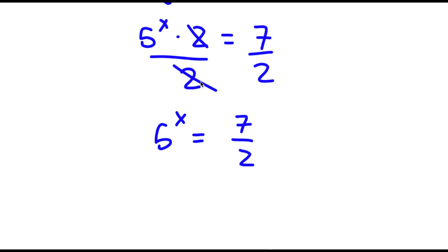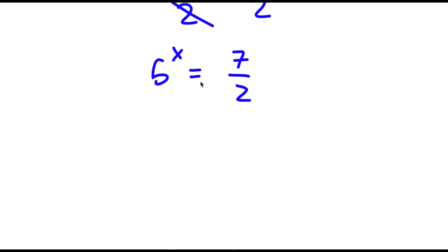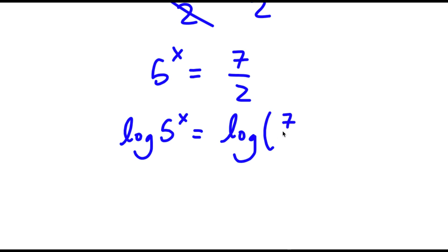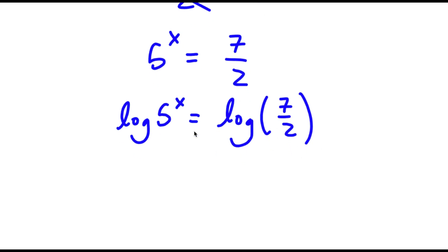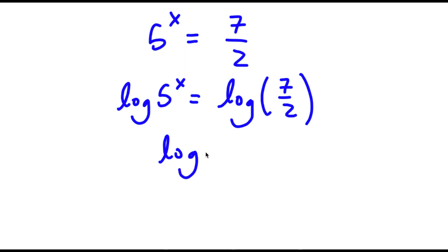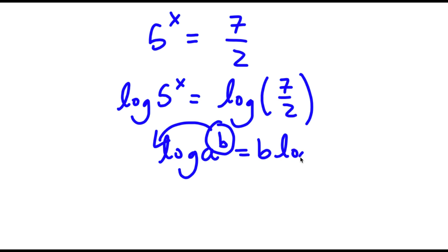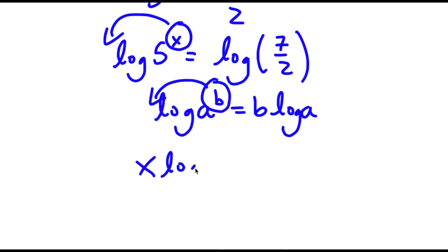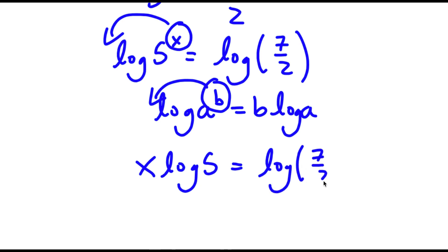Now from here, I'm going to take the log on both sides. So now I have log 5 to the power of x is equal to log 7 over 2. Now if I have something in the form log a to the power of b, I can move b to the front, so it's going to equal b times log a. So in this case, I have log 5 to the power of x, and I can move x to the front. So now I have x times log 5 is equal to log 7 over 2.